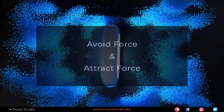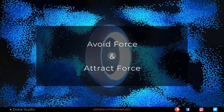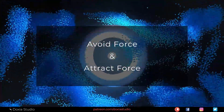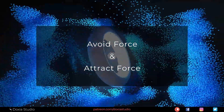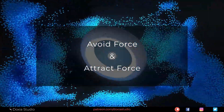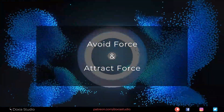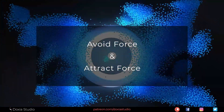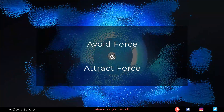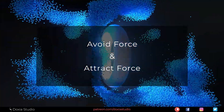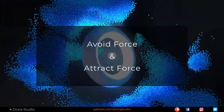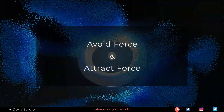First, we are going to understand how we can make our particles avoid other objects, but not with collisions. I want the particles to avoid the obstacles, but maintain the organic movement — kinda like fishes avoiding other animals.